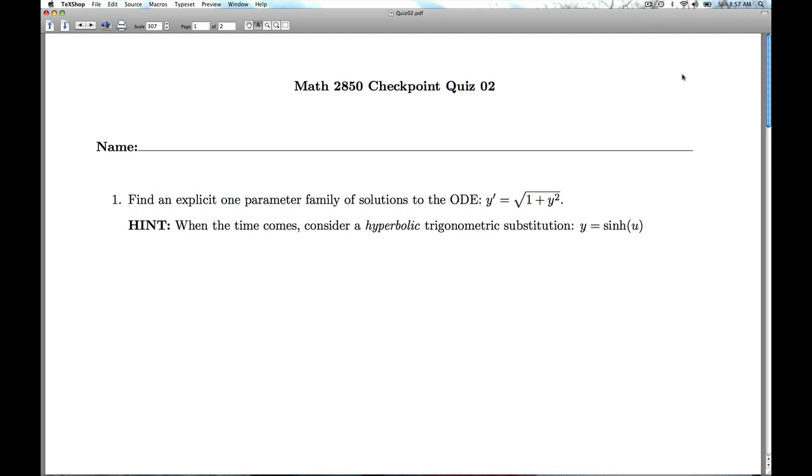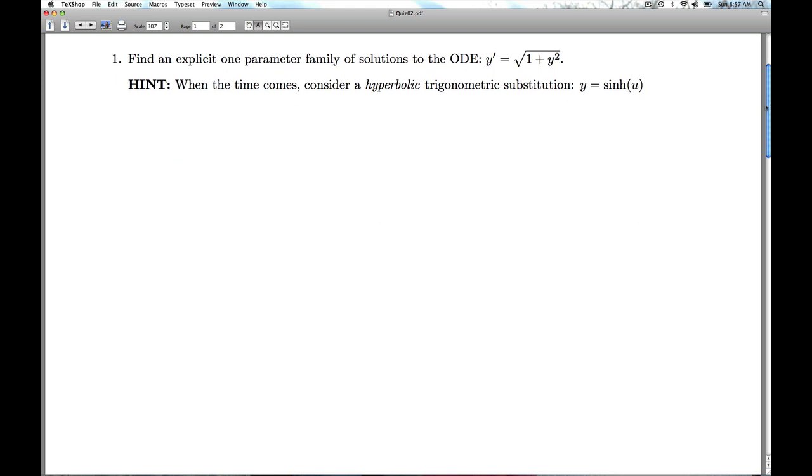Hi folks, this is Diffie Q Checkpoint Quiz 2. We're given a differential equation to solve. Find an explicit one-parameter family of solutions to the ordinary differential equation y' = √(1 + y²). And we're given this hint: when the time comes, consider a hyperbolic trigonometric substitution, y = sinh(u).